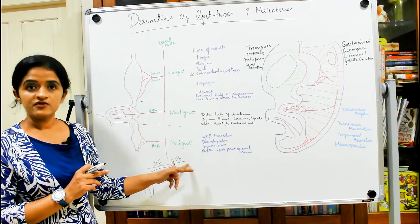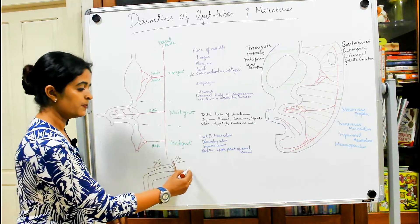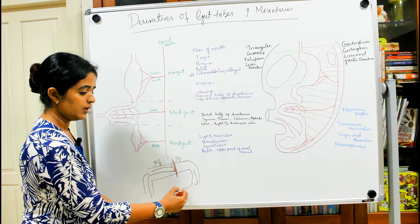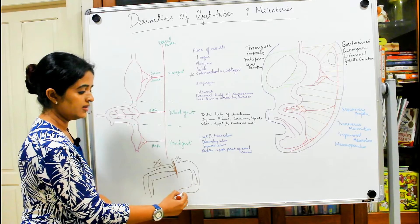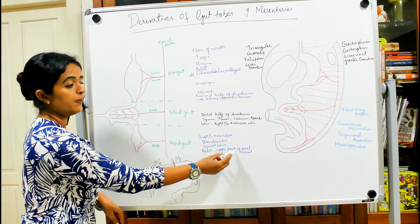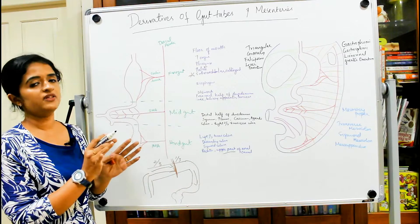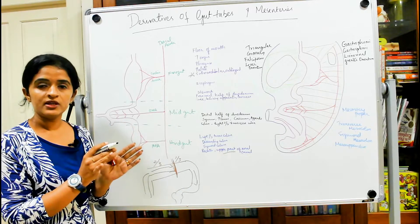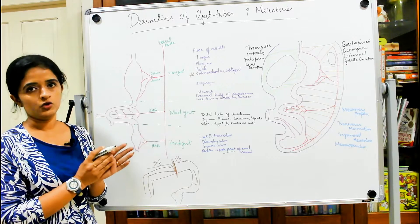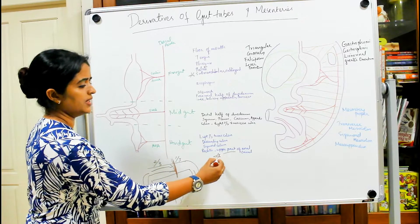Hindgut derivatives include the remaining left one-third of the transverse colon, then the descending colon, sigmoid colon, rectum, and upper part of the anal canal. The upper part of the anal canal is endodermal in origin, whereas the lower part is ectodermal in origin.